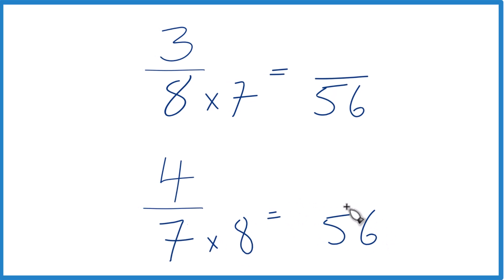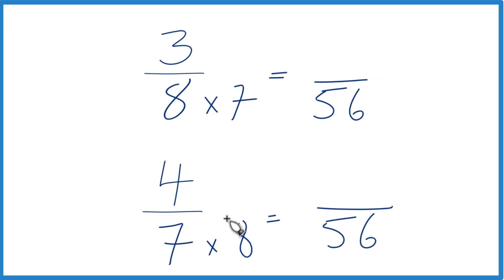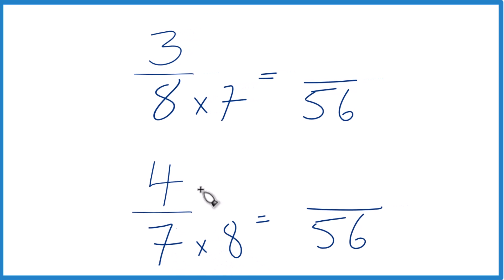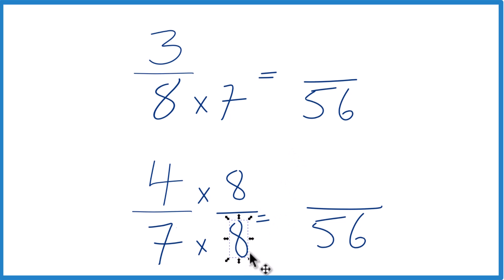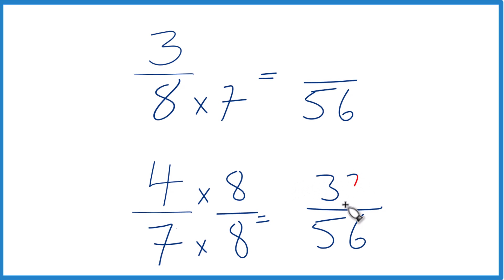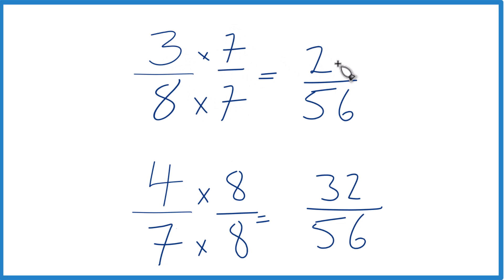Now we have the same denominator, but we can't just multiply the denominator by 8 — we need to multiply the numerator by 8 as well, because 8 over 8 is just 1, so we're really just multiplying by 1. We don't change the value, just the way it's written. 4 times 8 is 32. Up here, we want 3 times 7, so we have 7 over 7. 3 times 7 is 21.